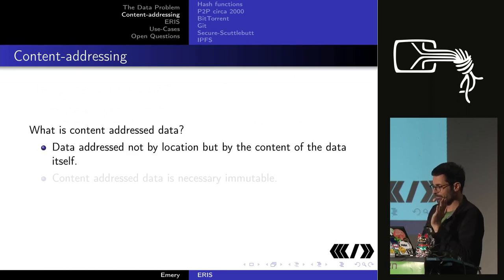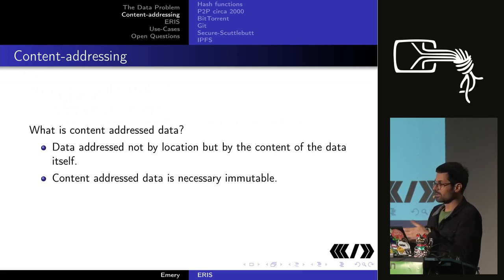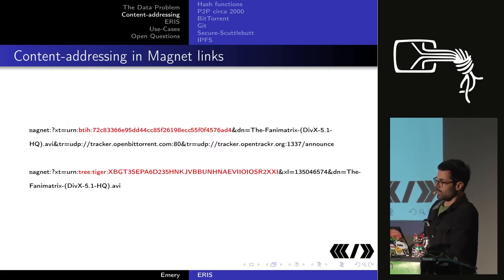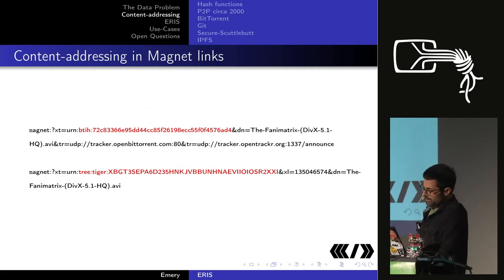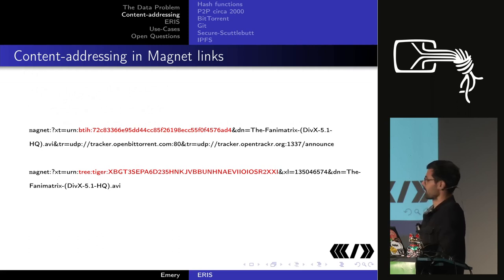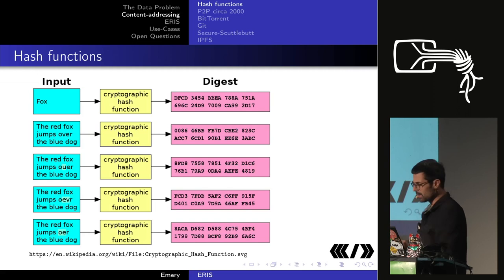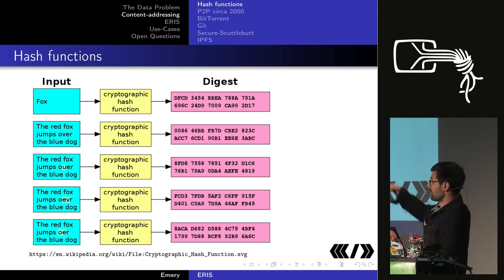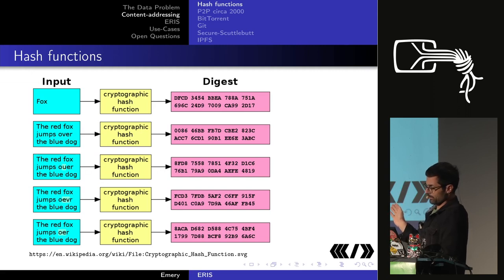So what is content-addressed data? Data addressed not by location, but by the content of the data itself. If the content changes, you have a different address — it's necessarily immutable. In the Magnet link examples, there's a hash digest in the middle. A hash function is a one-way function where for any input you get a fixed-length output. The same input always gives the same output, and changing any bit of the input gives a different output. The output is indistinguishable from random data.